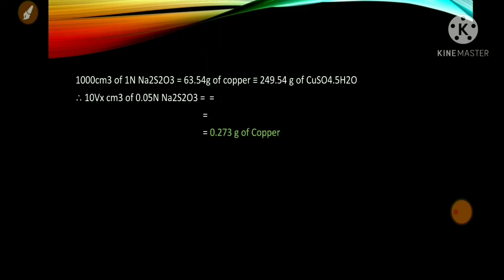1000 cm³ of 1 N sodium thiosulphate solution is equivalent to 63.54 g of copper (atomic weight of copper), which equals 249.54 g of copper sulphate pentahydrate. Hence, the amount of copper present in the solution is determined by cross multiplication: 10 × Vx = 10 × 8.6 cm³ of 0.05 N sodium thiosulphate gives 63.54 × 249.54 × 10 × 8.6 / 1000 cm³. The calculated amount of copper is 0.273 g present in the given solution.